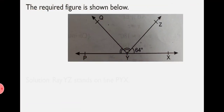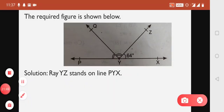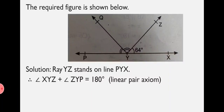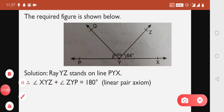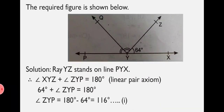Now let us find the solution. Ray YZ stands on line PYX. You can see in the figure that Ray YZ stands on line PYX. When this stands on the line, you get Angle XYZ plus Angle ZYP equals 180 degrees using the Linear Pair Axiom. Angle XYZ is given as 64 degrees. Therefore, 64 plus Angle ZYP equals 180, so Angle ZYP equals 180 minus 64, which equals 116 degrees. Let this be equation number 1.